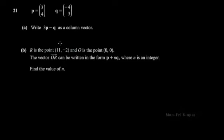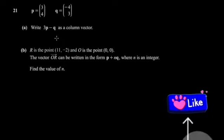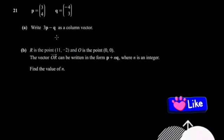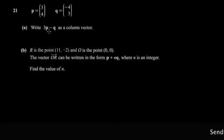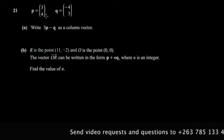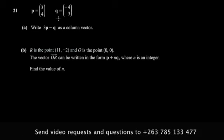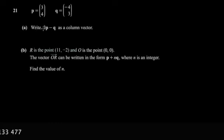We're continuing with our paper today — this question is on vectors, specifically scalar multiplication of vectors. You're given two vectors written in column form, and you're asked to write 3p minus q as a column vector.